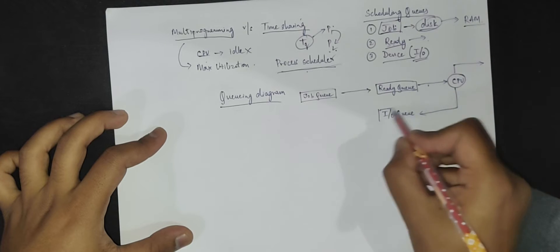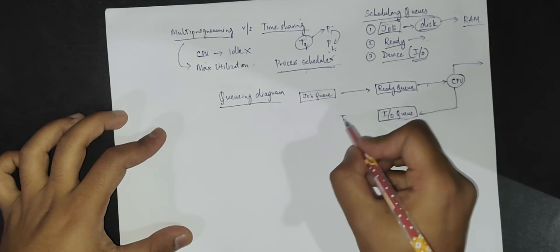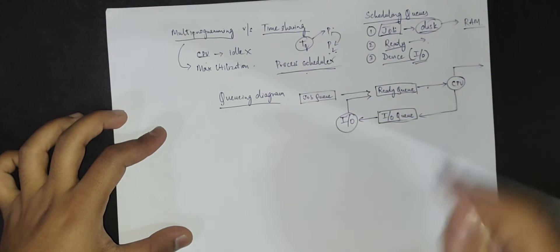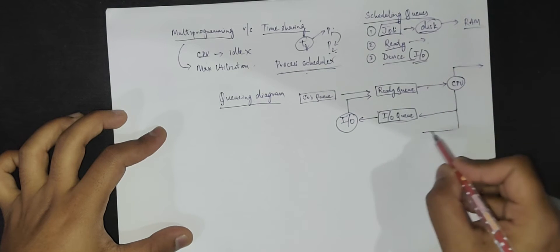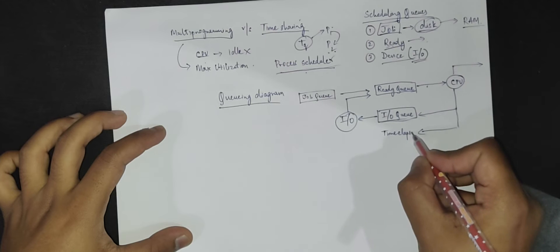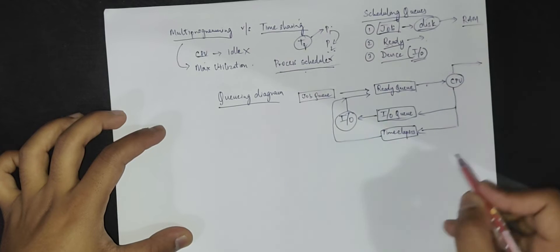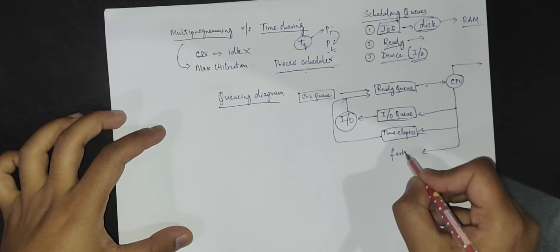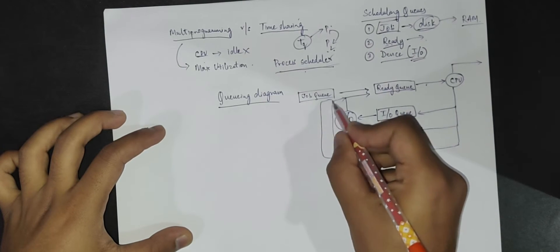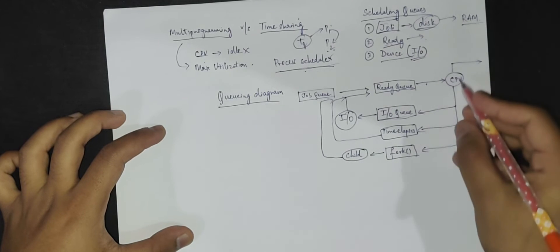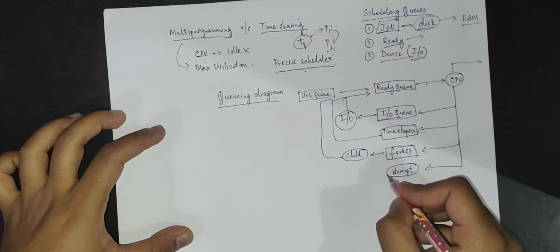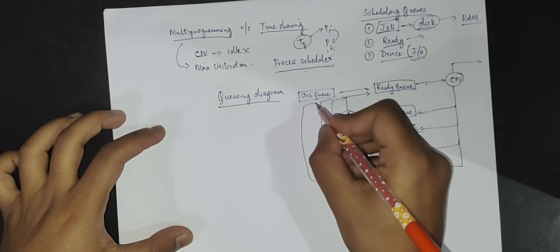Once a process gets the IO it will perform its input/output operation and then can be moved back to the ready queue. Other things can also happen while it's executing: maybe the time quantum elapses, in which case we move it back to the ready queue. Or maybe the process has created a child process using fork, and once the child completes execution the parent process is moved back to the ready queue. Or if there was an interrupt, we remove it from the CPU, handle the interrupt, and then move it back to the ready queue.